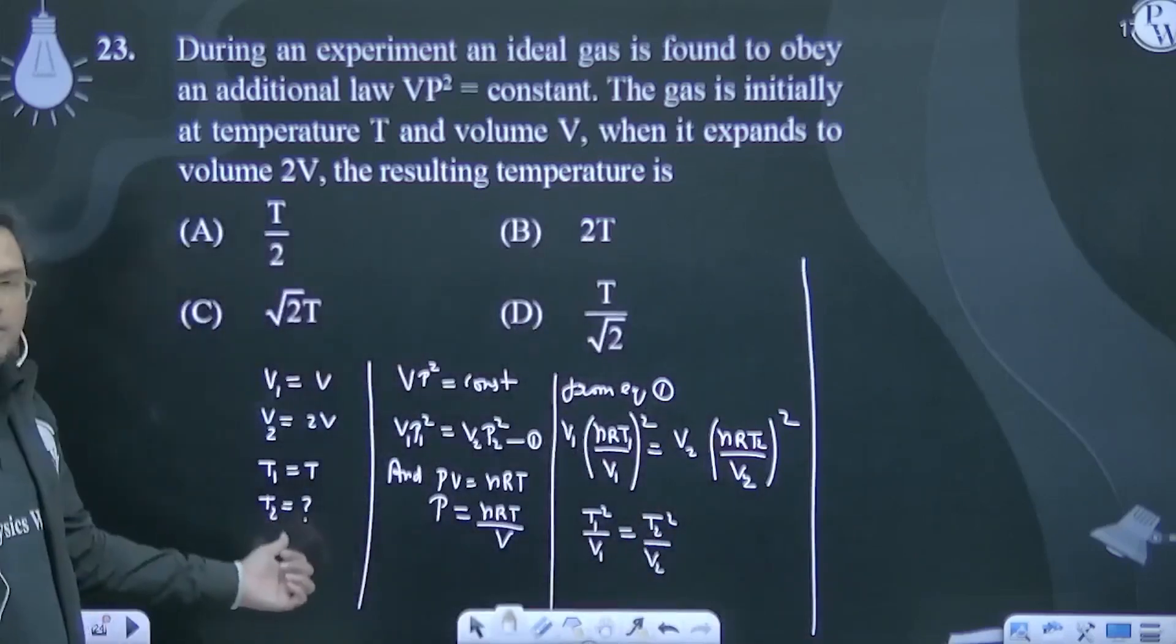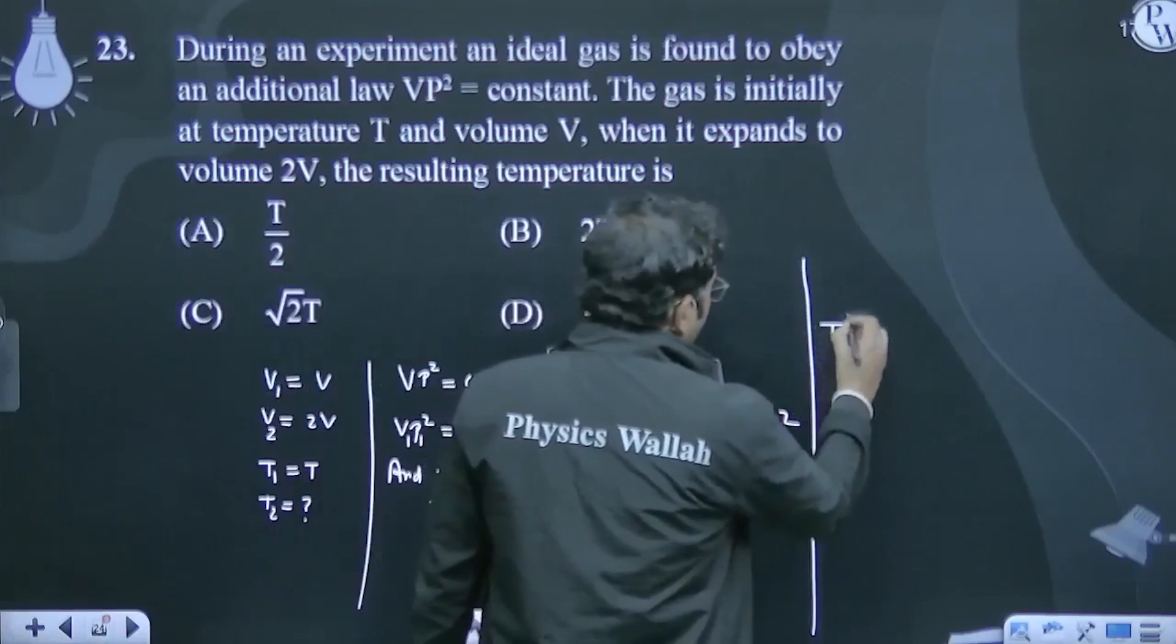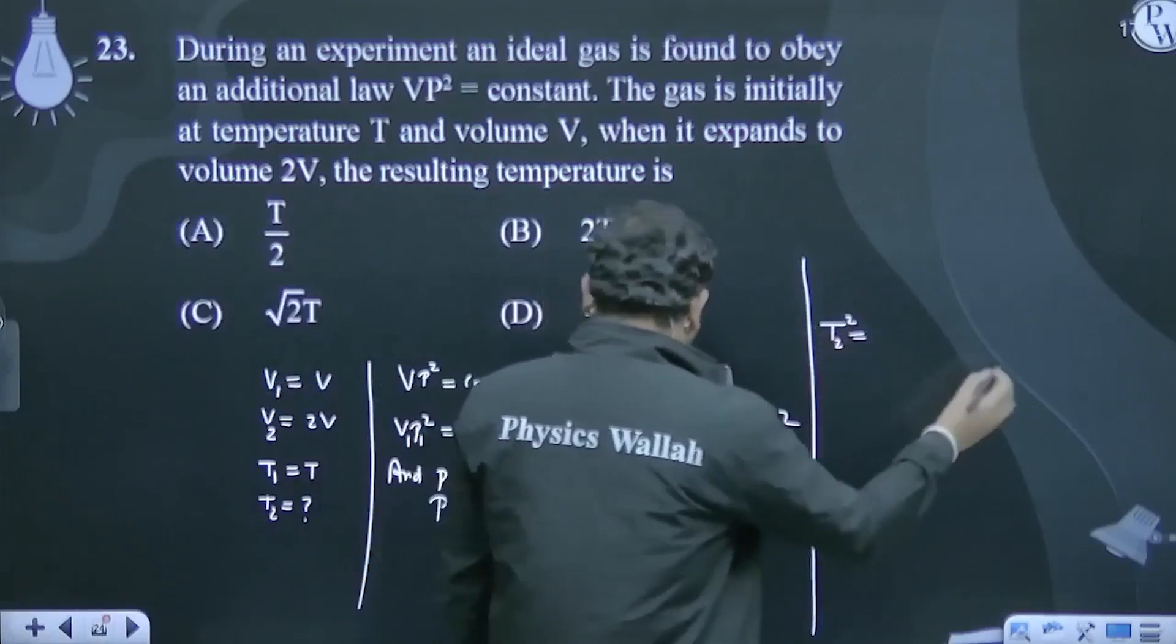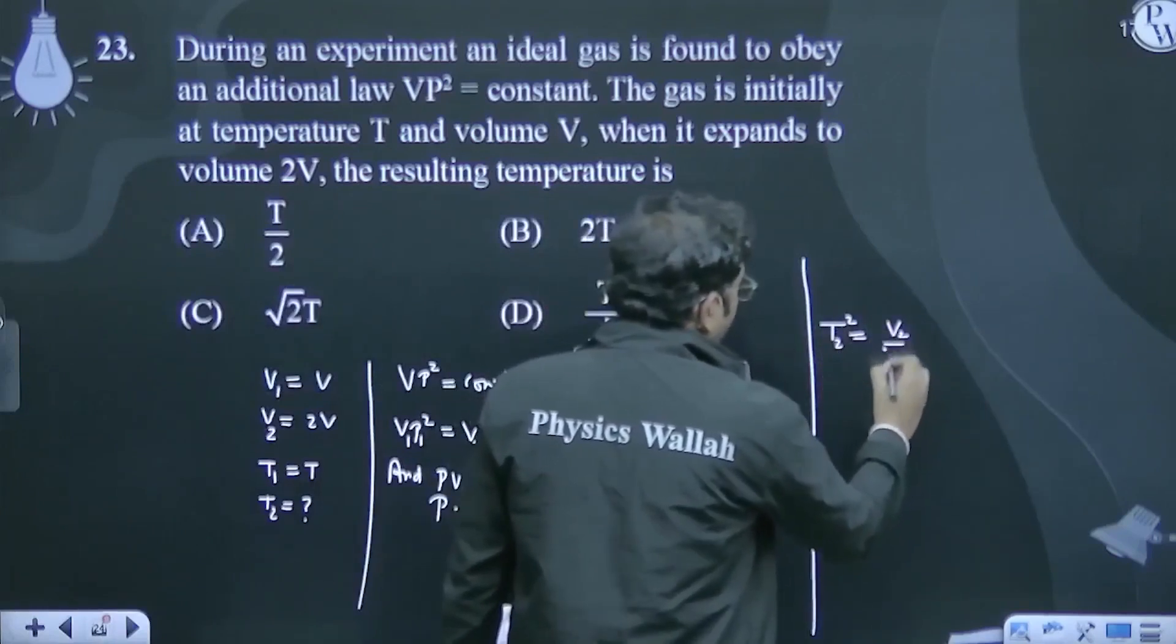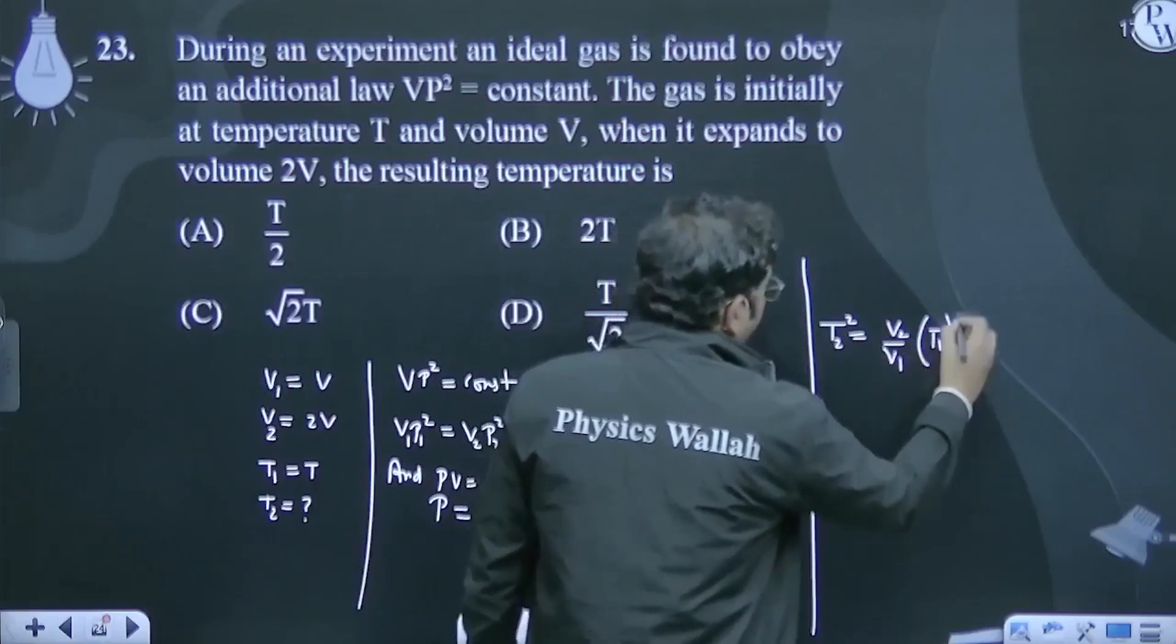What was asked? T₂ squared is equal to V₂ divided by V₁ times T₁ squared.